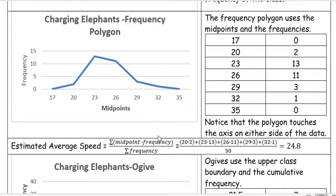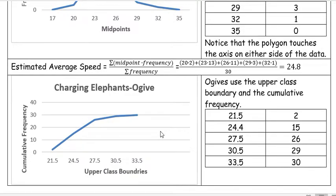The last graph I had for this was the ogive. The ogive uses the upper class boundary and the cumulative frequency. The boundaries are the things that are sort of in between our two classes.